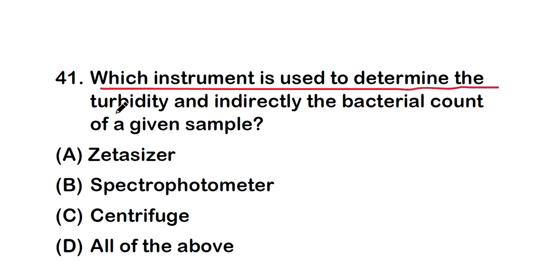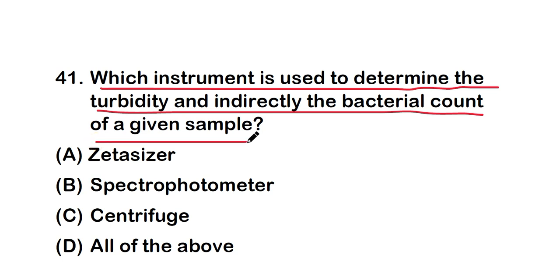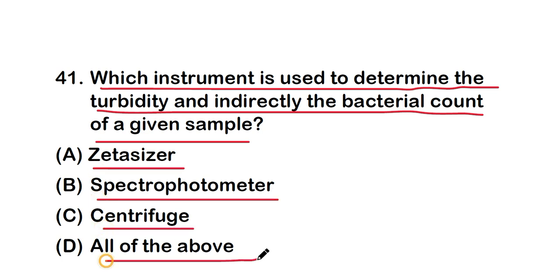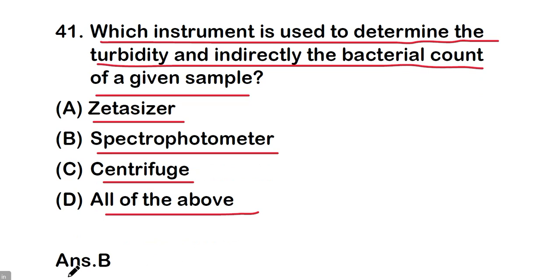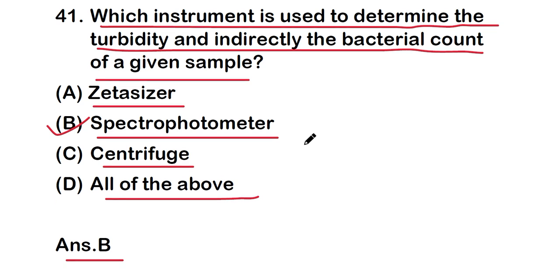The first question is: which instrument is used to determine the turbidity and indirectly the bacterial count of a given sample? Options are: zetasizer, spectrophotometer, centrifuge, or all of the above. The right answer is option B — spectrophotometer.